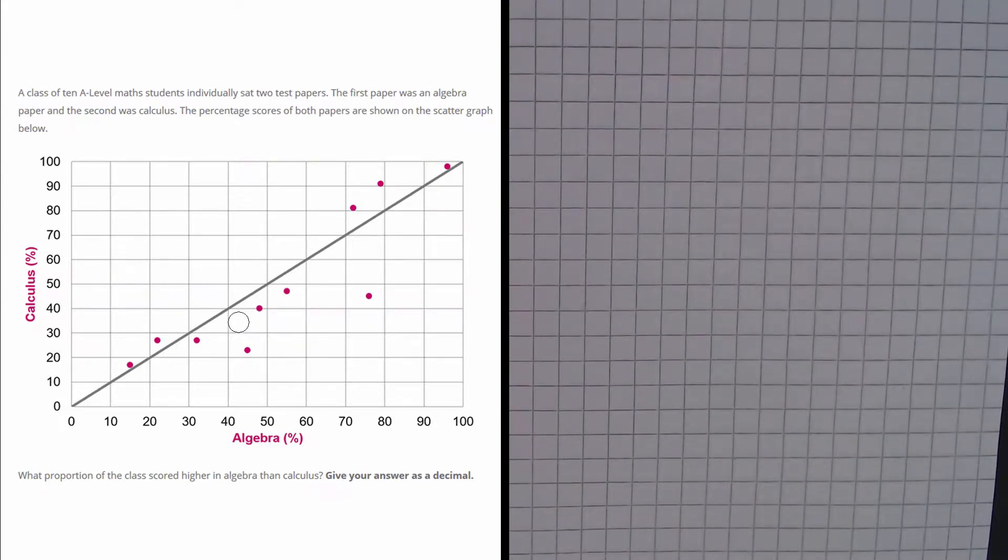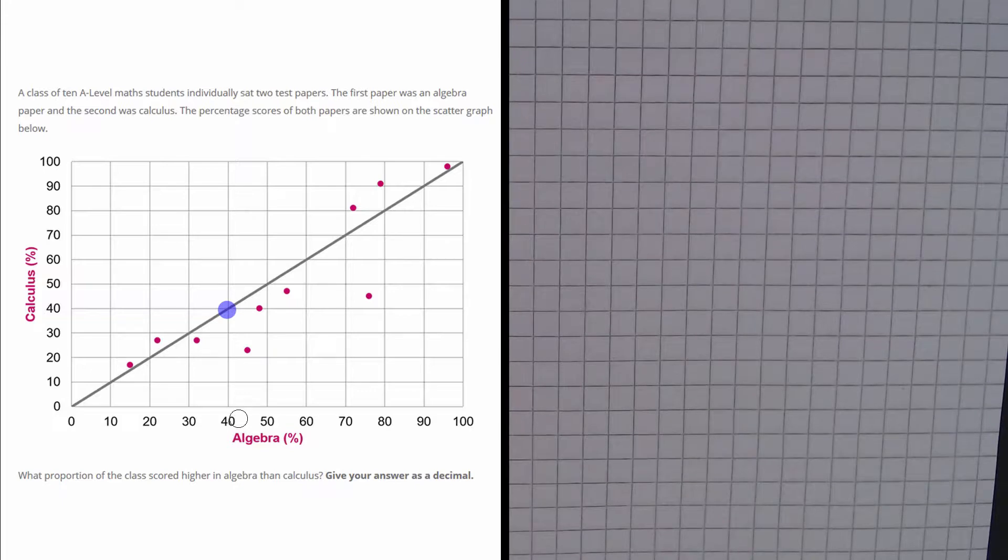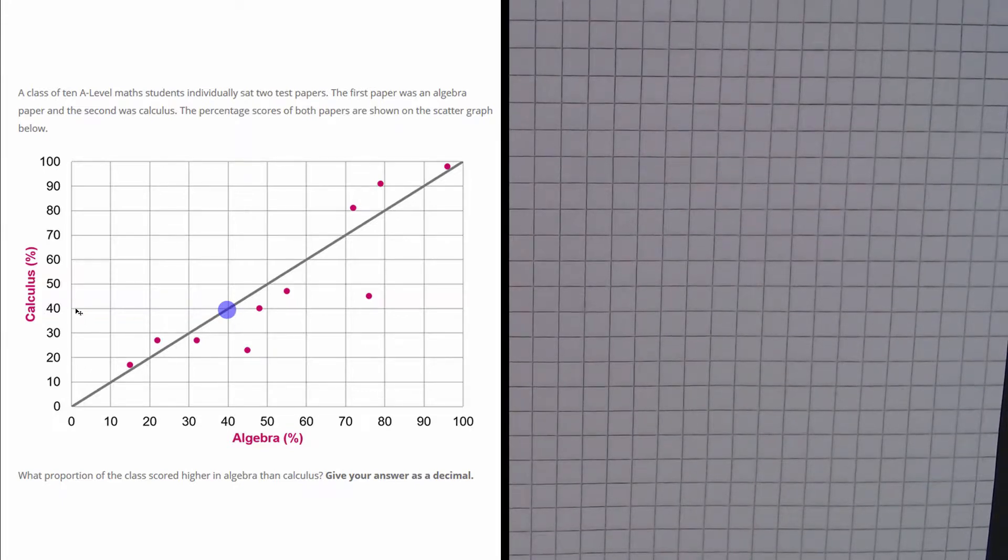For example, if I pick this point here, you could see that person would have got 40 in Algebra and 40 in Calculus.